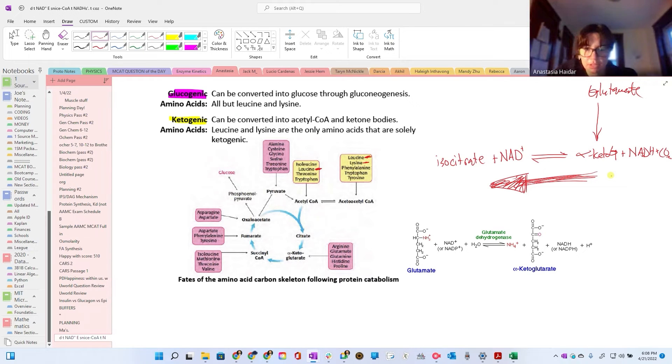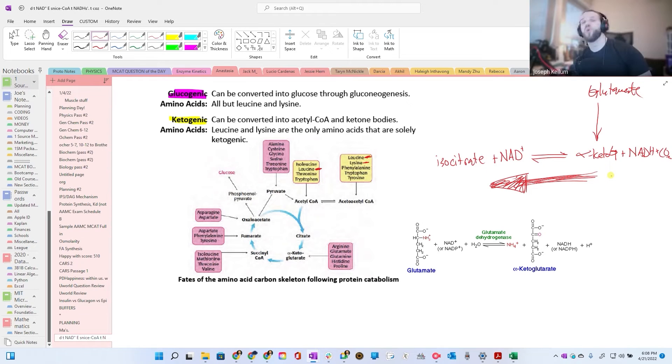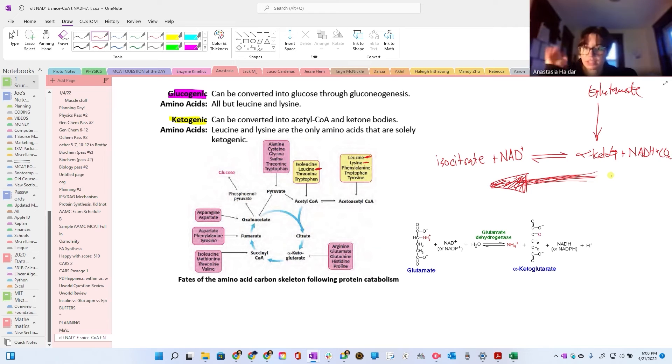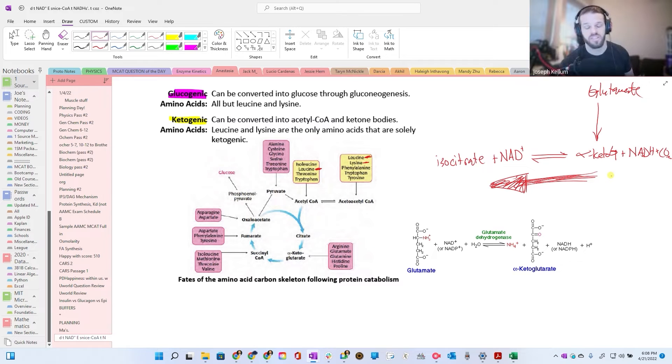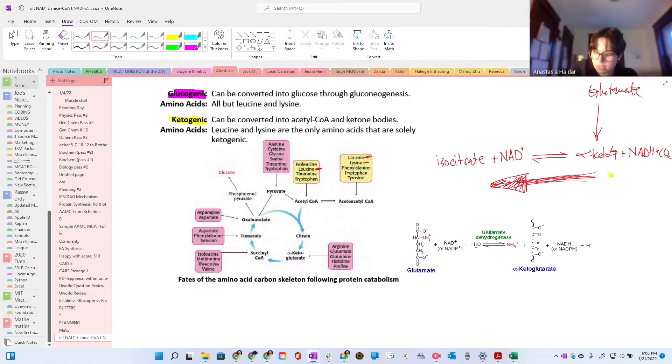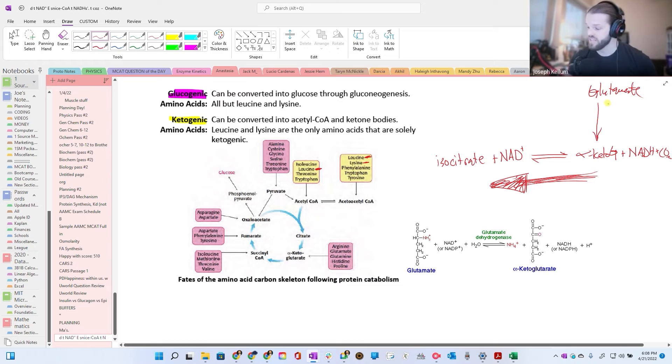This process shows alpha-ketoglutarate can also become glutamate if there's too much of it, for example. You just make amino acids instead. Yeah. If we're on the Snickers diet and not eating any protein at all, just tons of carbs, then you're going to break down glucose to pyruvate and then turn that into acetyl-CoA, combine that with some oxaloacetate, make it into citrate, make it into isocitrate, and then make that into alpha-ketoglutarate. Now we have this—this is that equilibrium as well.